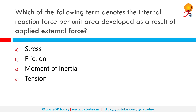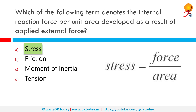Which of the following terms denotes the internal reaction force per unit area developed as a result of applied external force? The correct answer is stress. Stress applied to a material is the force per unit area applied to that material. The maximum stress a material can stand before it breaks is called the breaking stress or ultimate tensile stress.